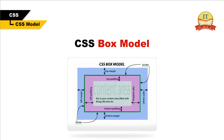CSS box model. In CSS, the term box model is used when we talk about design and layout. The CSS box model is essentially a box that wraps around HTML elements, and it consists of margins, borders, padding, and the actual content. The box model allows us to place a border around elements and space elements in relation to other elements. In order to set the width and height of an element correctly in all browsers, you must know how the box model works.